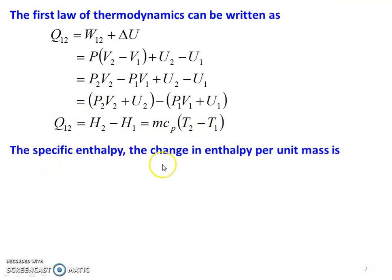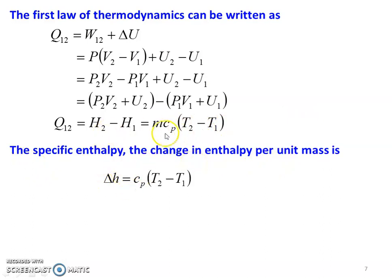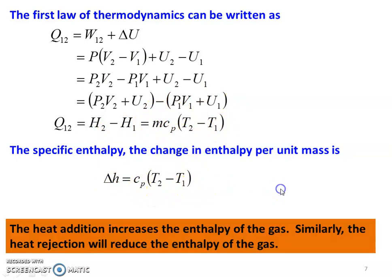The specific enthalpy is the change in enthalpy per unit mass: Δh = Cp(T2 − T1). Heat addition increases the enthalpy of the gas; similarly, heat rejection reduces the enthalpy of the gas in a constant pressure process.